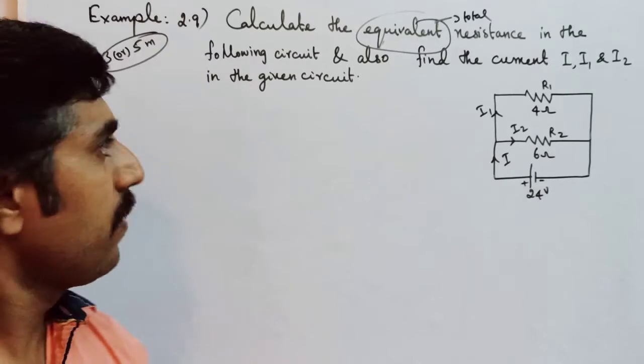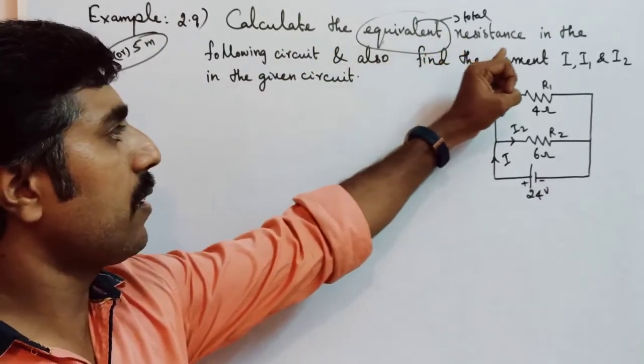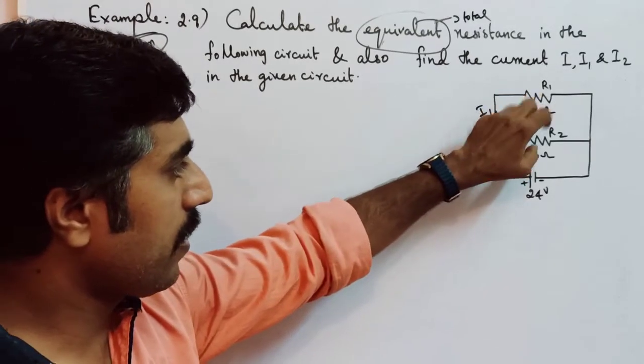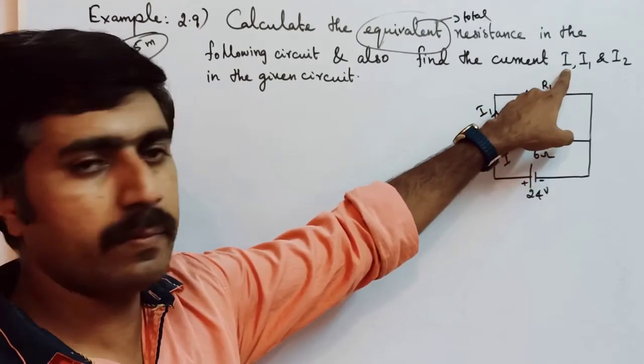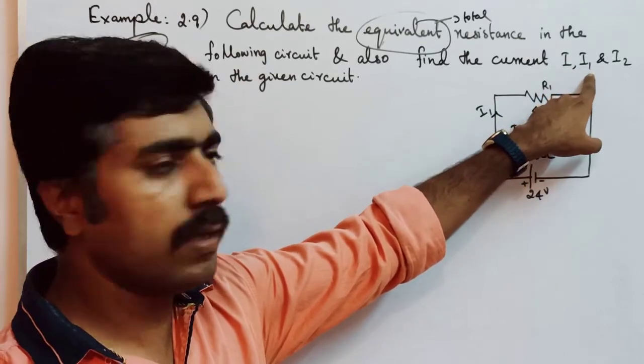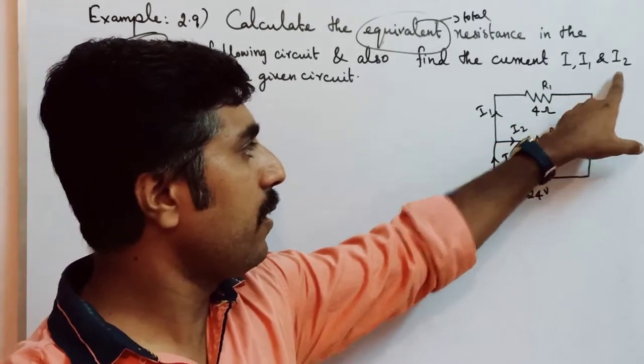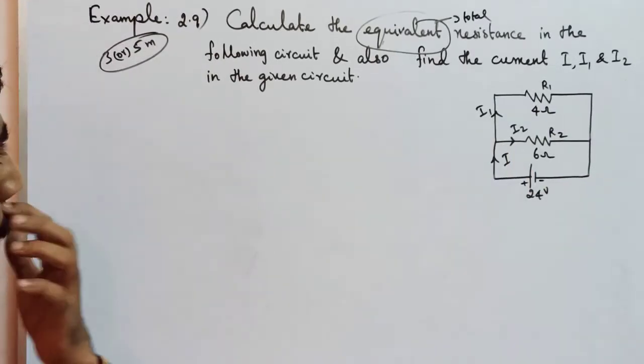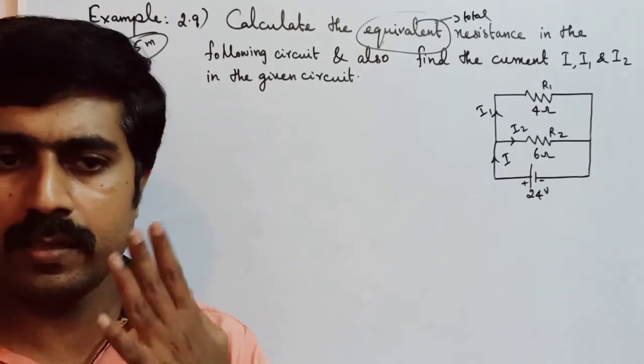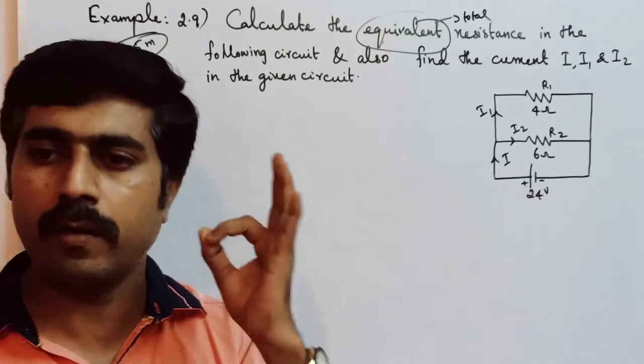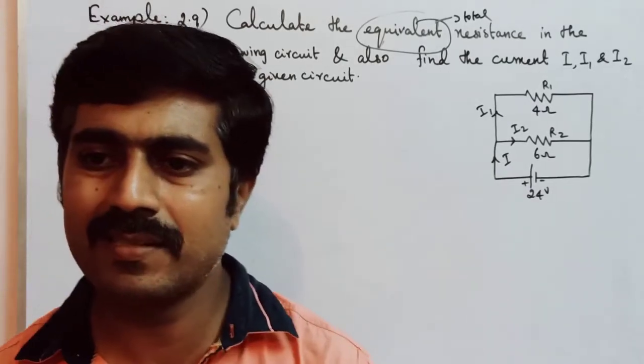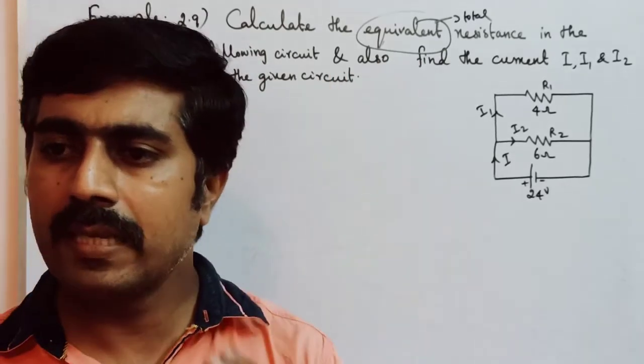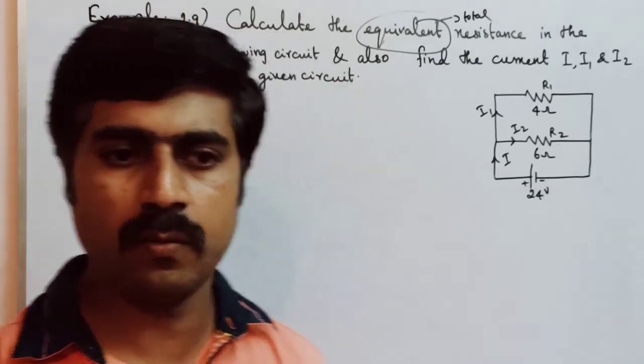First one, we need to calculate the total resistance in the given circuit. And the second one, what about the total current in the given circuit, that is denoted by letter I, and the individual current I1, I2 across the resistors 4 Ohm, 6 Ohm, correct? If we calculate the total resistance, first determine the circuit. What combination? Series combination or parallel combination?